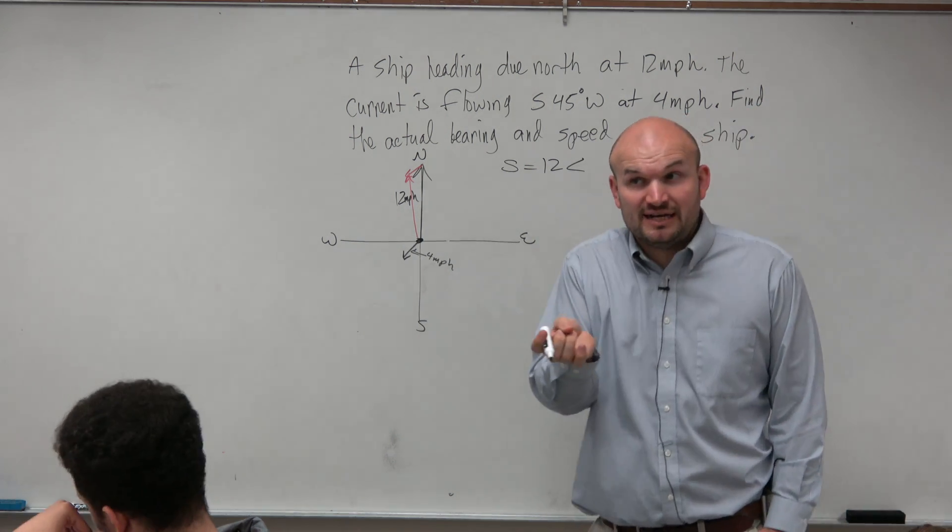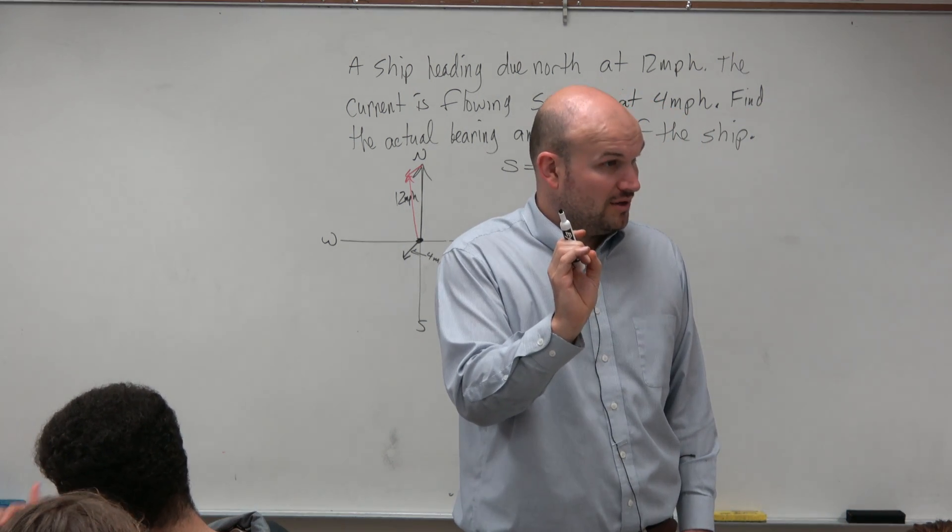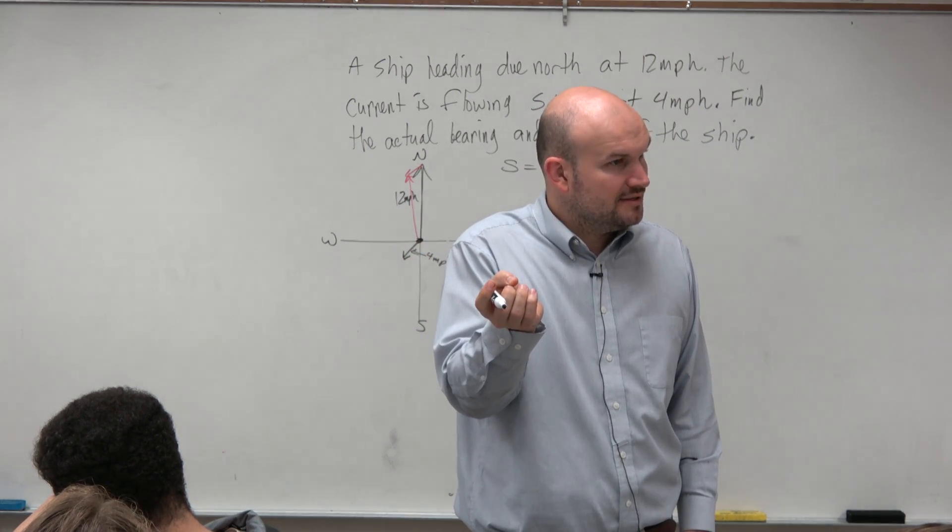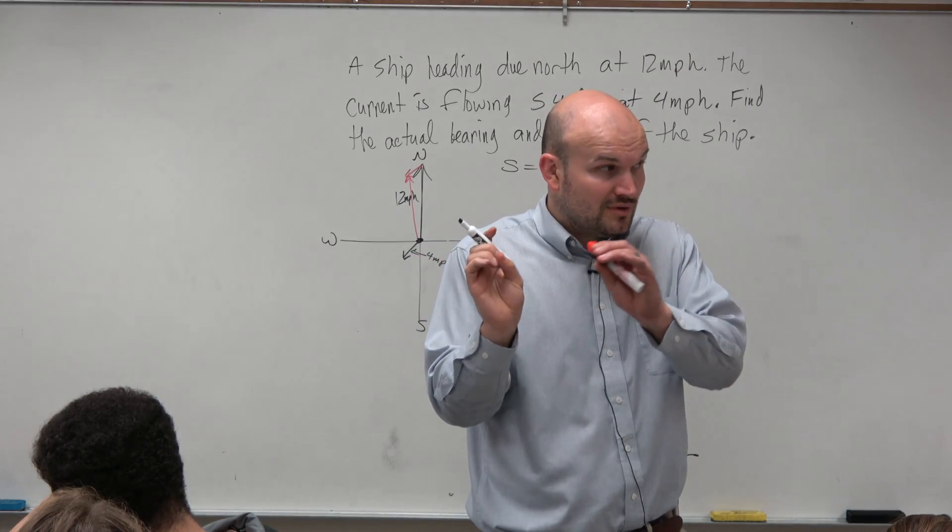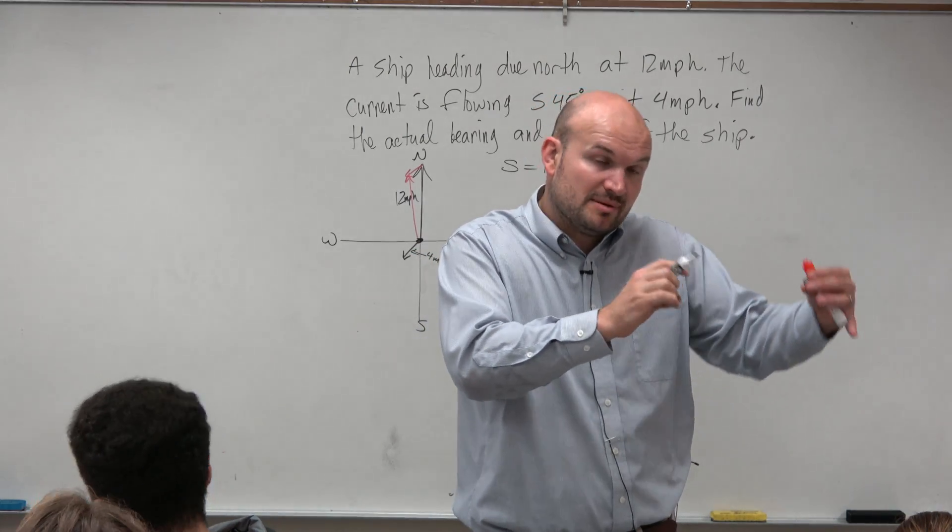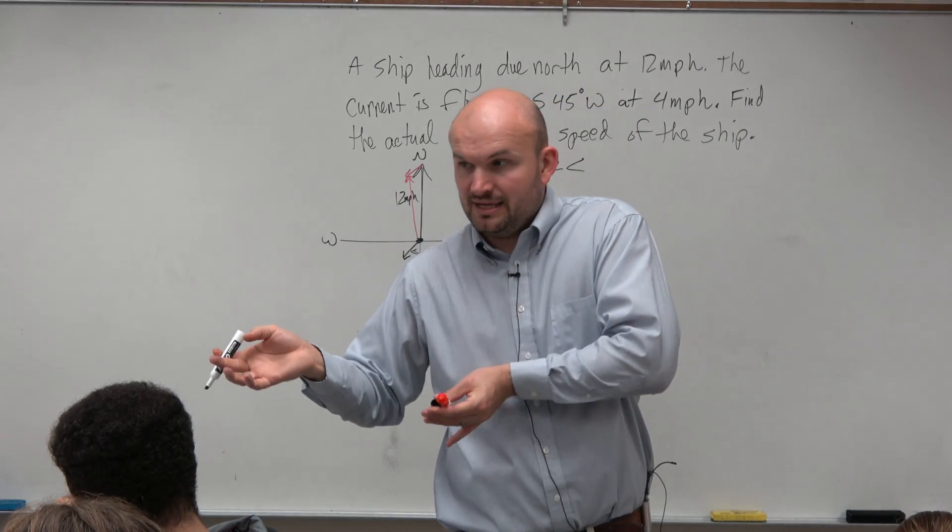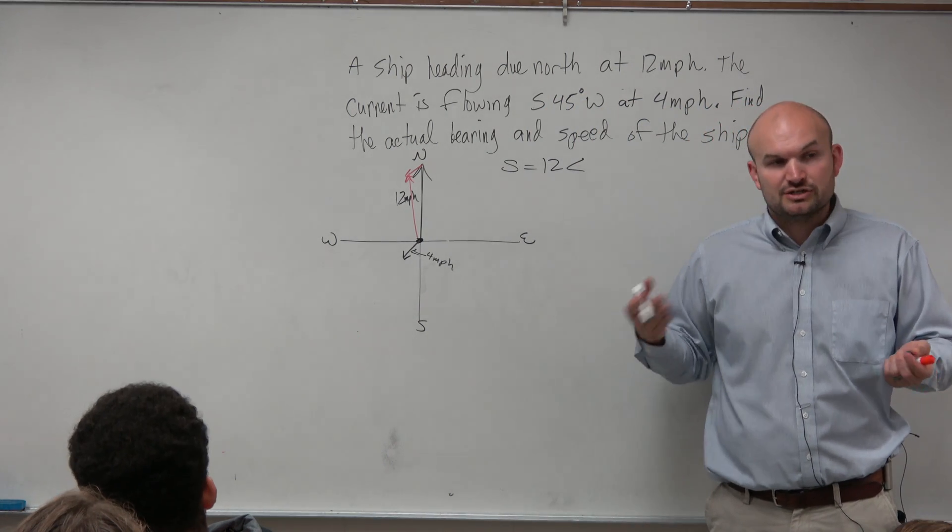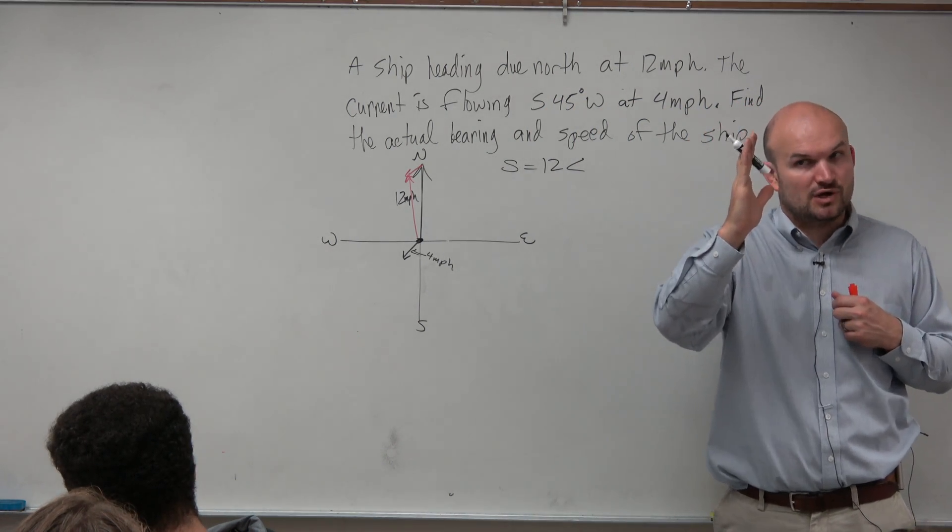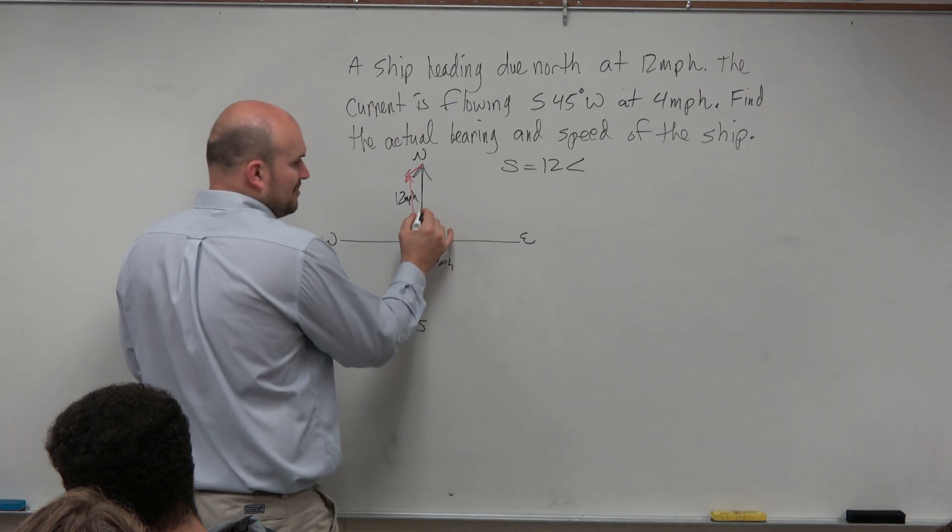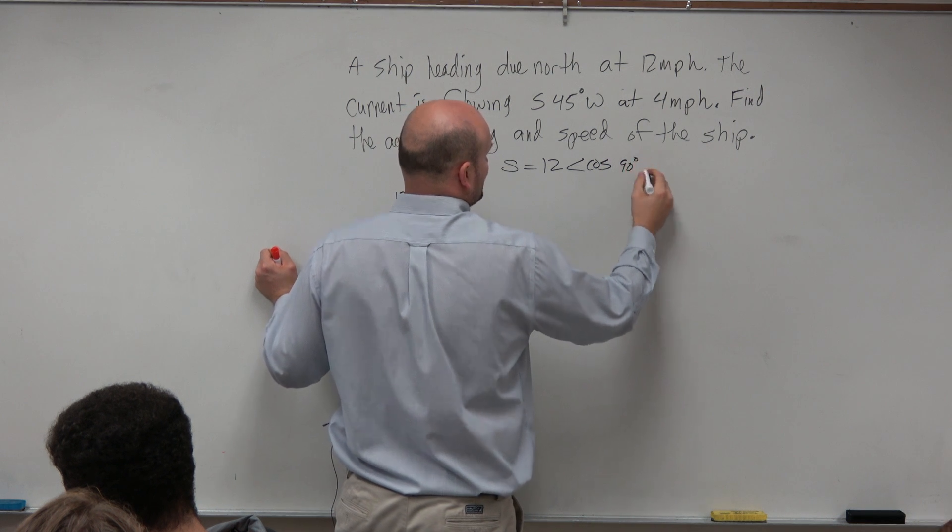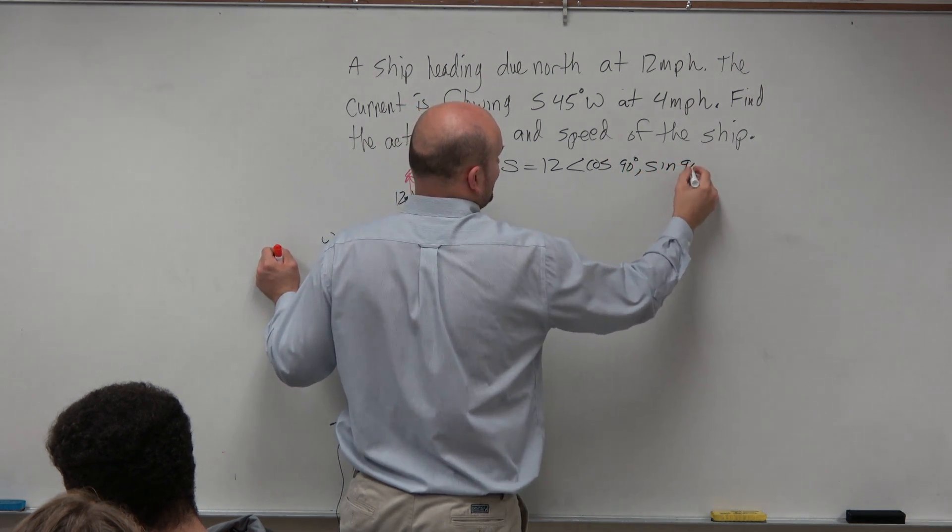Now, in terms of bearings, that's an angle of 0. But your calculator doesn't know the difference between bearings and standard form, right? So we have to connect the problem in bearings from the problem in our standard form. We can't plug in 0 degrees into our calculators, thinking the calculator is going to know that it's due north. The calculator knows 0 degrees in a bearing as 90 degrees. So we're going to say cosine of 90 degrees comma sine of 90 degrees.